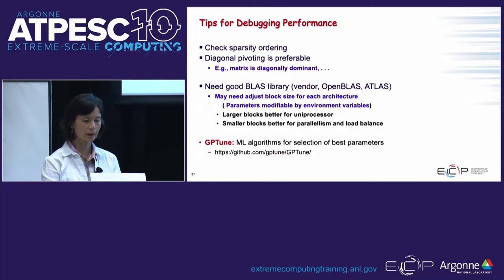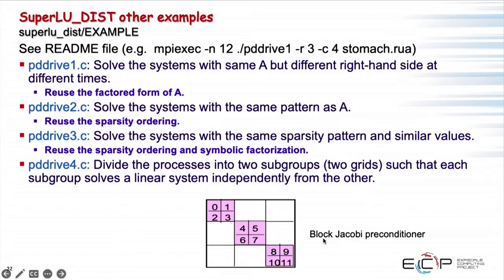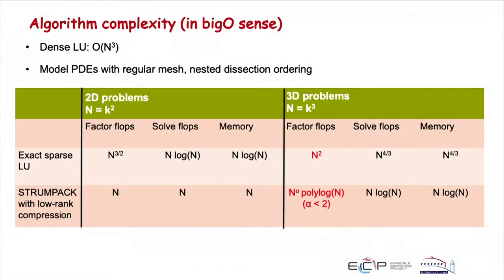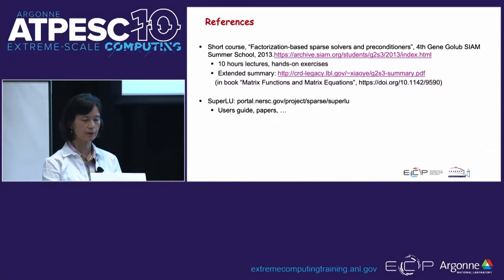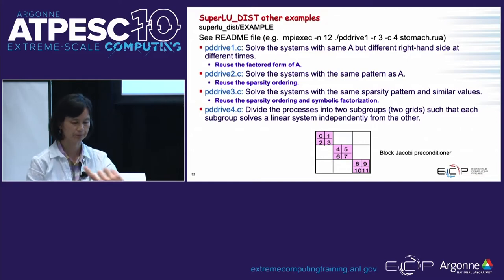The solver has many options you can choose: ordering options, numerical pivoting options, and so on. If you run a bigger problem or have numerical issues, there are tips for performance tuning. One tool to mention is GPTune — an automatic performance tuner you can use to change parameters and see how they affect performance on your machine.